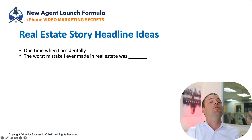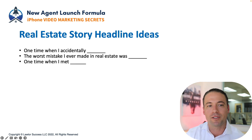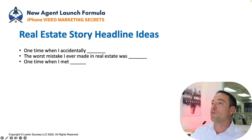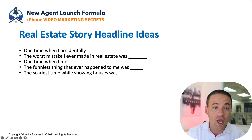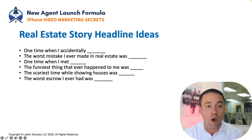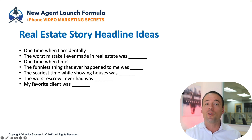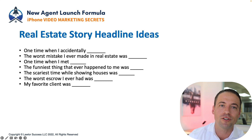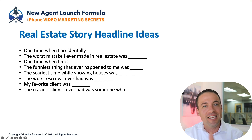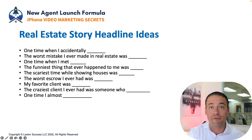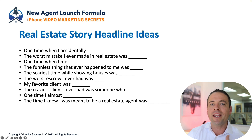'The worst mistake I ever made in real estate' — make sure it wasn't something that hurt somebody; make it a funny worst mistake. 'One time when I met a famous person,' 'The funniest thing that ever happened to me in real estate,' 'The scariest time showing houses,' 'The worst escrow I ever had — be careful, don't name someone, change names.' 'My favorite client ever' — make it the one who refers you the most and incentivize them. 'One time I almost forgot [this].'